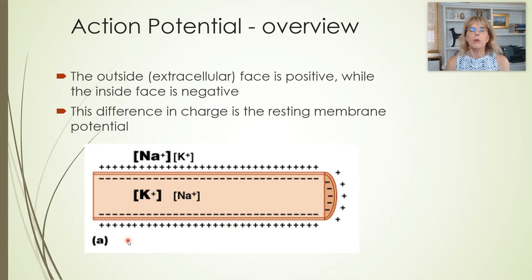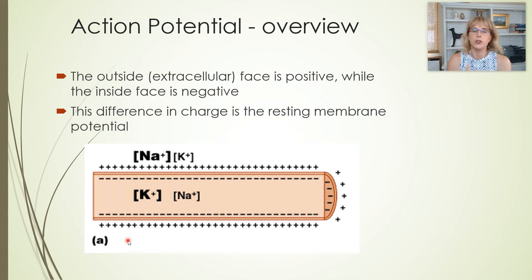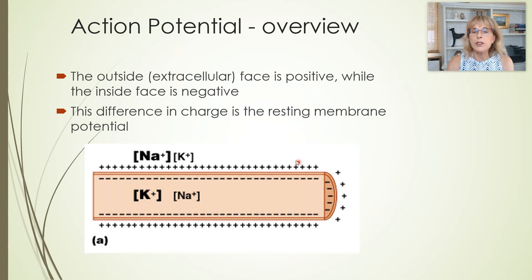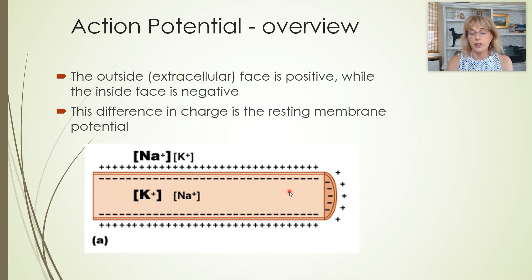Now we're going to start with the action potential. We could start with graded potentials or the exocytosis of neurotransmitters — we could start anywhere — but we're going to start with action potentials. All of the cells in your body have an unequal distribution of ions, so all the cells of the body have more positively charged ions than they should on the outside, and more negatively charged ions than they should on the inside.